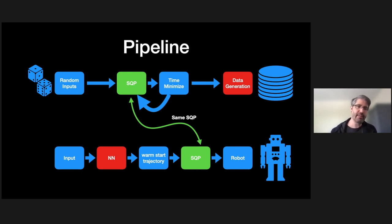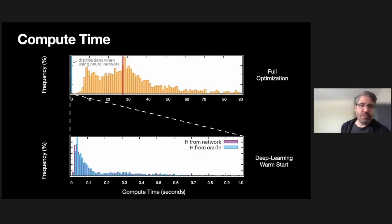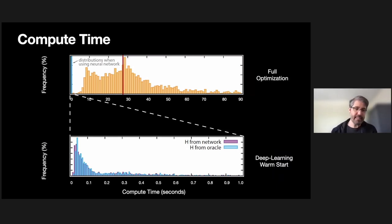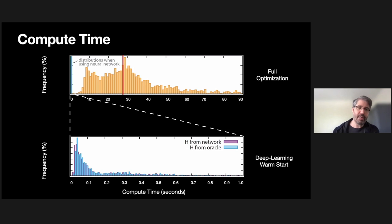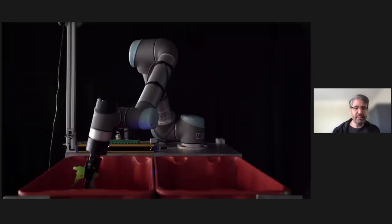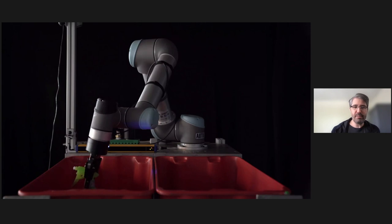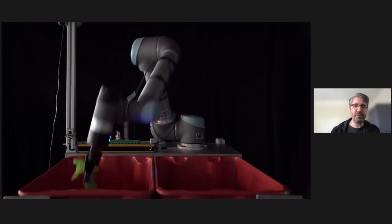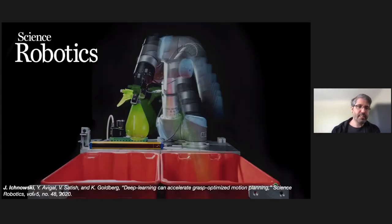When we put this all together, our compute time dropped from 28 seconds to 80 milliseconds — a 300x improvement on optimization time — making it very practical for actual use. On the robot we get less overshoot. This work was on the cover article of Science Robotics.